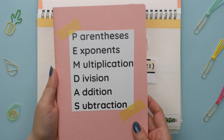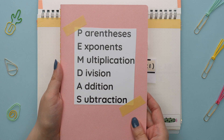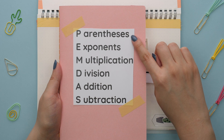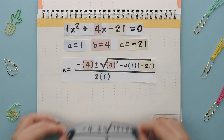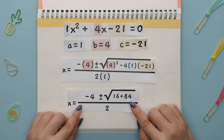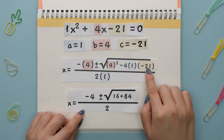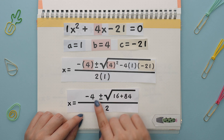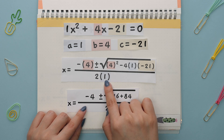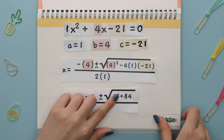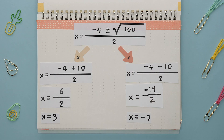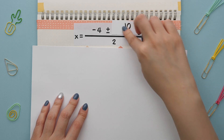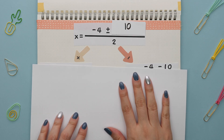This next step goes back to order of operations, where we will start with the exponents since there are no parentheses with a math operation inside. 4 squared is 16. Next, we can multiply these two negative numbers to get positive 84. We can also drop the negative 4 down and multiply 2 times 1, which is 2. Add these two numbers to get 100, then take the square root of 100, which is 10.